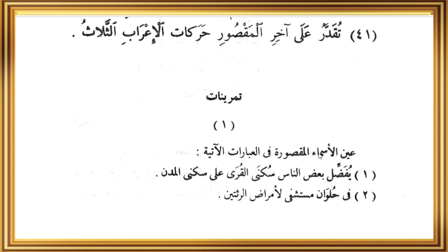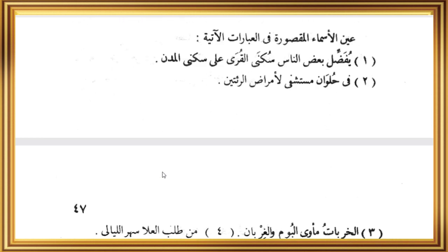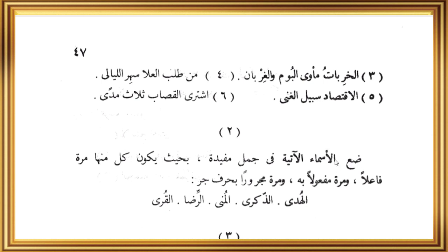Pertanyaan halaman pertama: ayin al-asma al-maqsurah fil-ibarat al-atiyah - tentukan isim-isim maqsurah pada susunan di bawah ini. Kelompok kedua: letakkan al-asma al-atiyah fi jumalin mufidah - pada susunan yang sempurna, bihaithu yakunu kul minha - di mana masing-masing dari isim tersebut: marra fa'ilan, marra maf'ul bihi, marra majruran biharfi jar. Kata-kata yang dilatih adalah: al-huda, al-zikra, al-muna, al-rubana, al-qura.